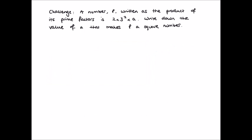So let's have a look at the challenge. We have a number p, which written as its product of its prime factors, is 2 times 3 squared times a. And we want to find the value of a, or a value of a, that makes p a square number.